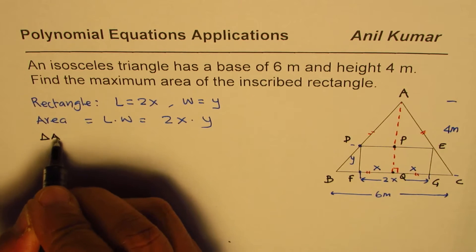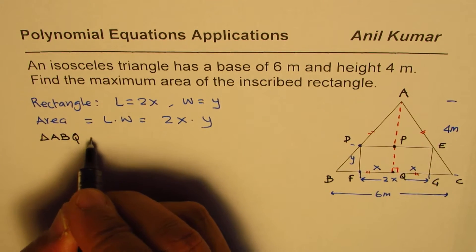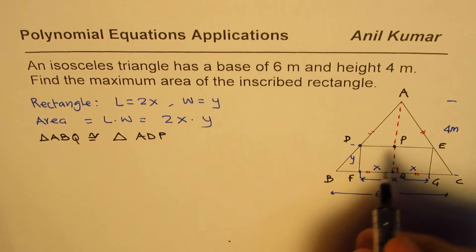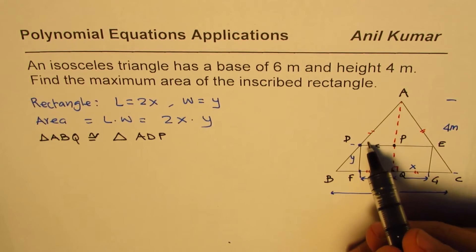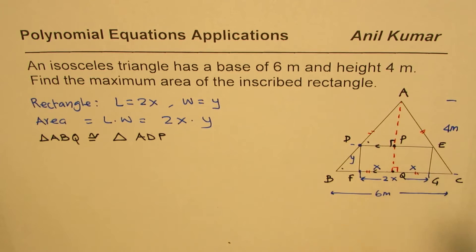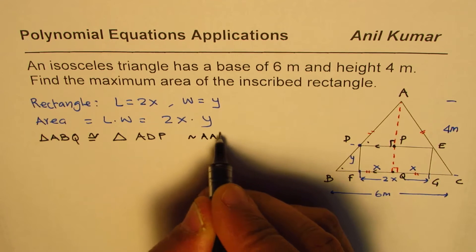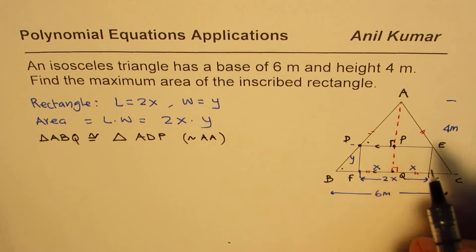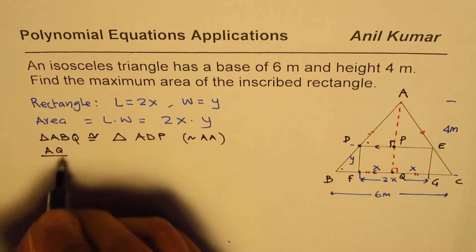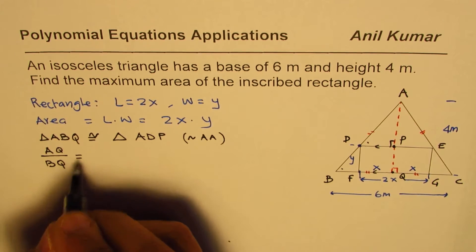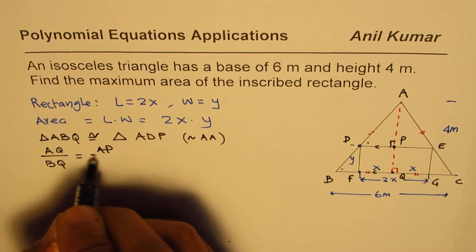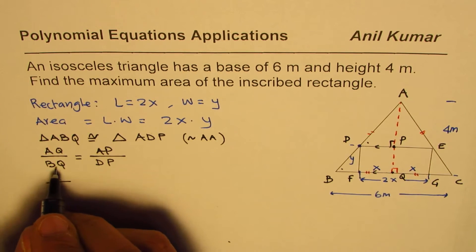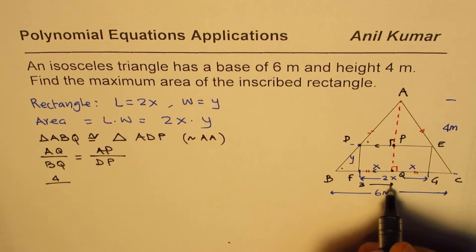Triangle ABQ is similar to triangle ADP. Since this is a rectangle, these sides are parallel, so the angles are the same — both 90 degrees. Since they are similar triangles, the ratio of their sides should be equal. We can write: AQ over BQ equals AP over DP. AQ is 4 meters, and BQ is half of 6, so BQ equals 3.